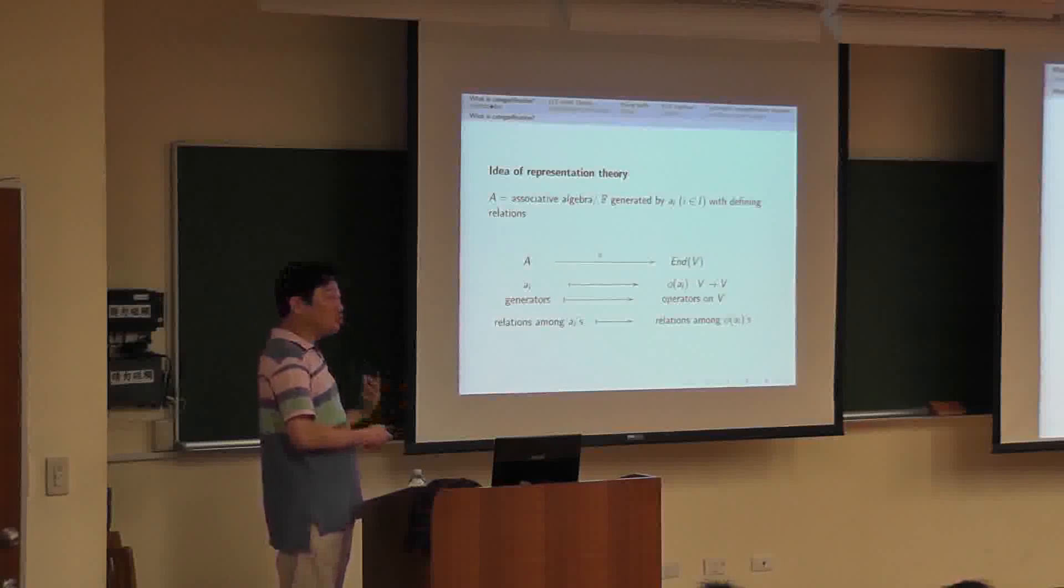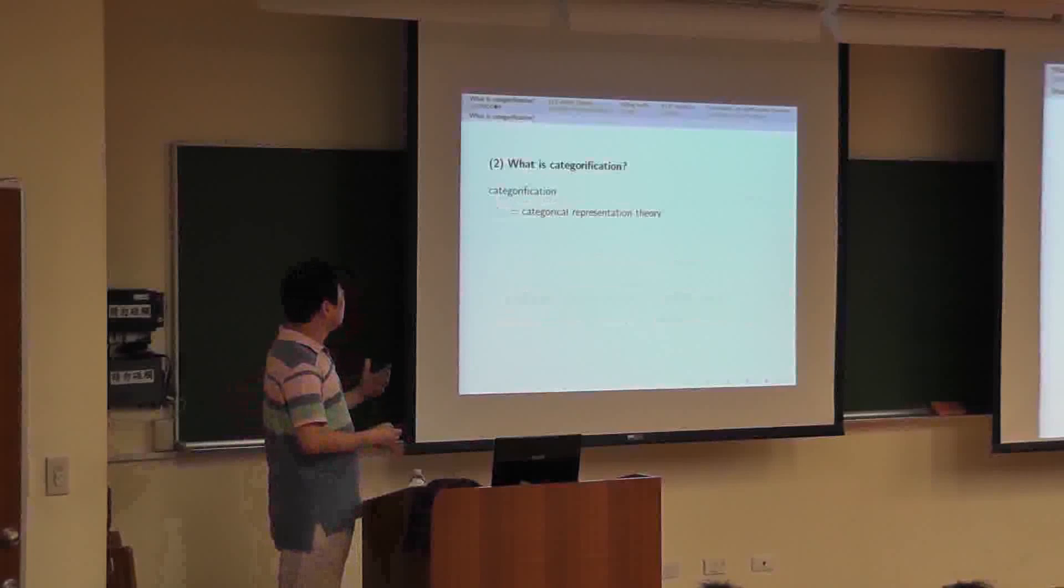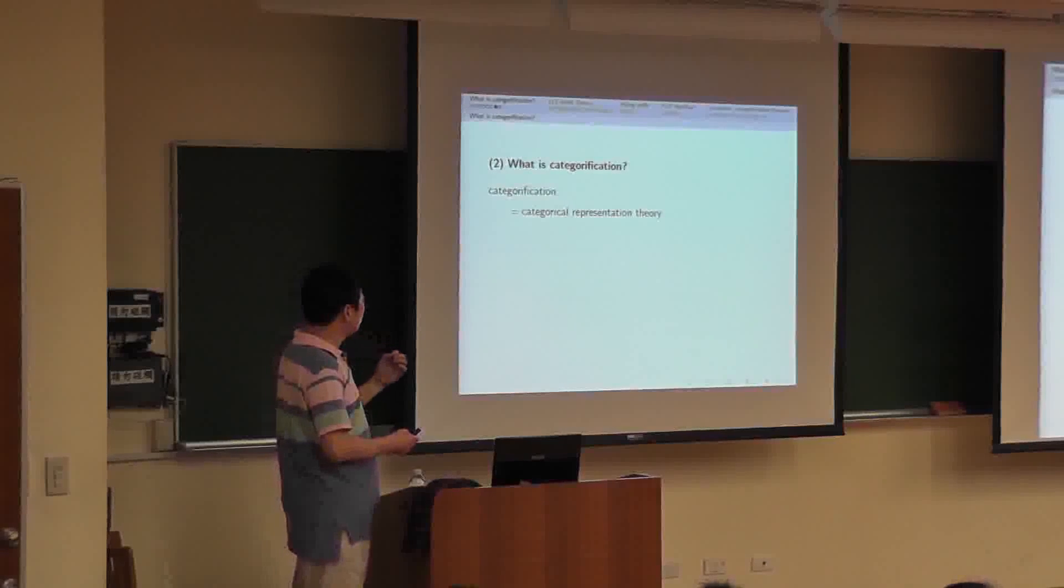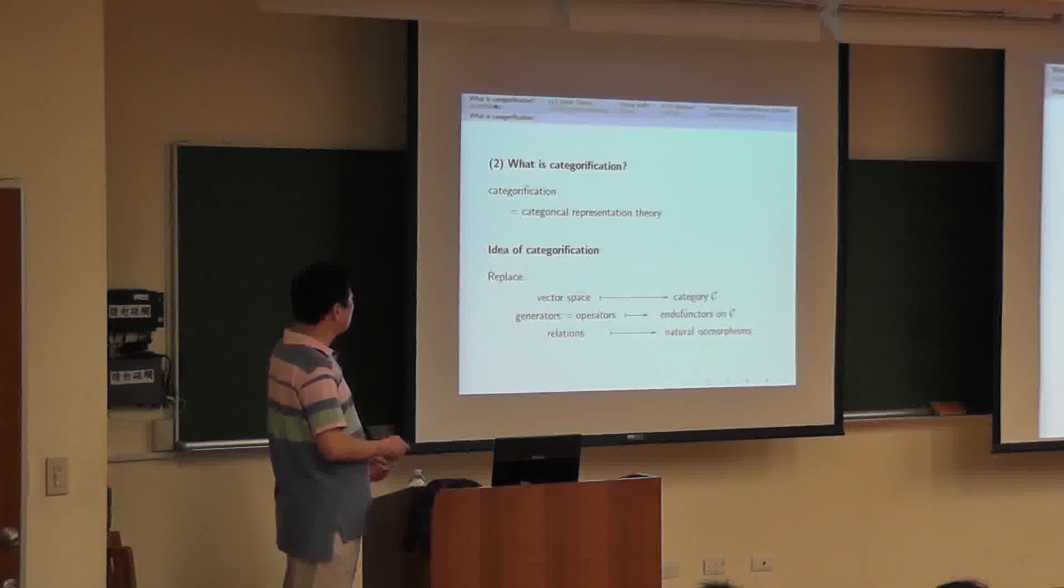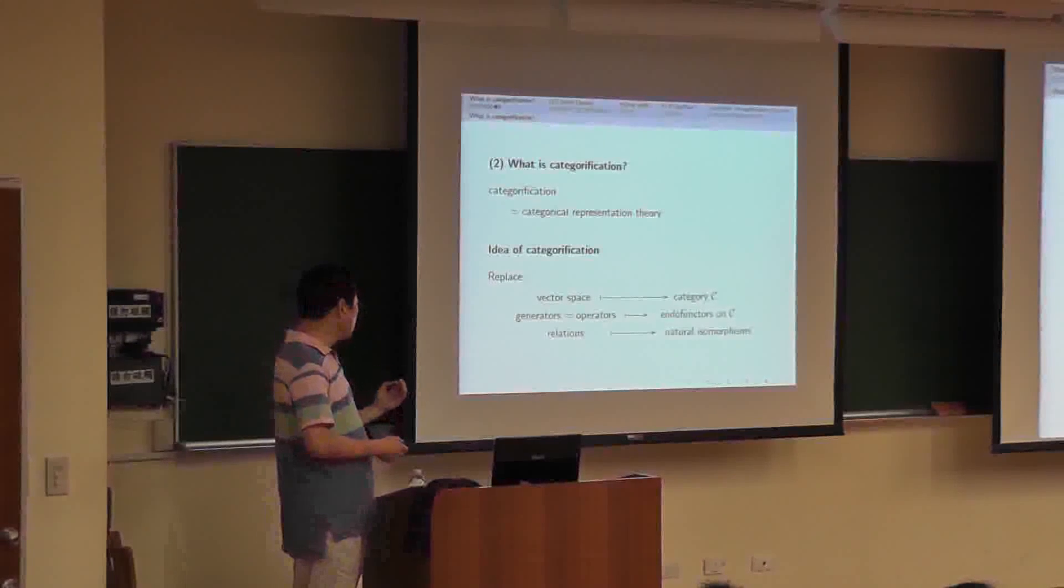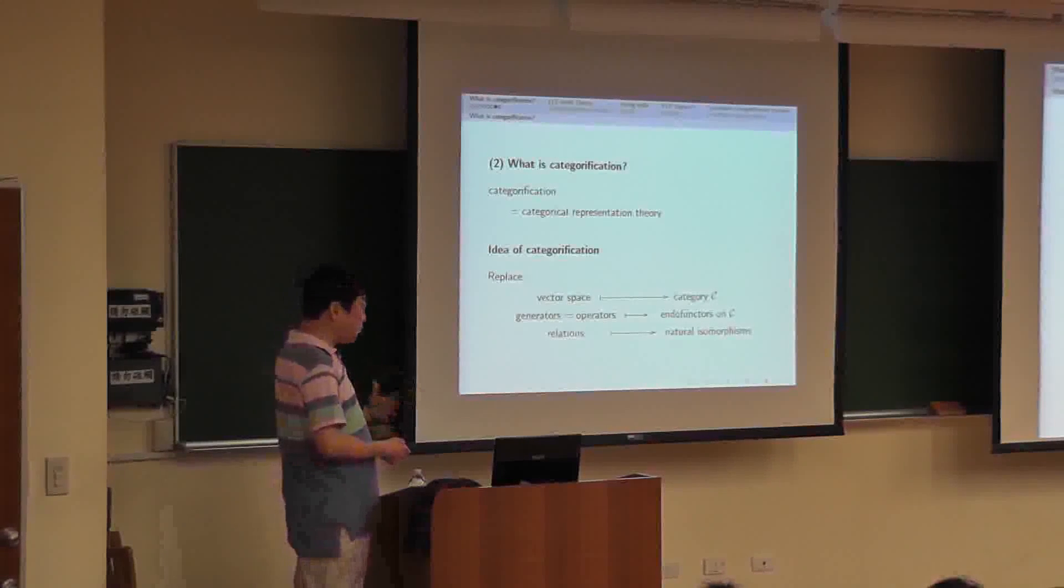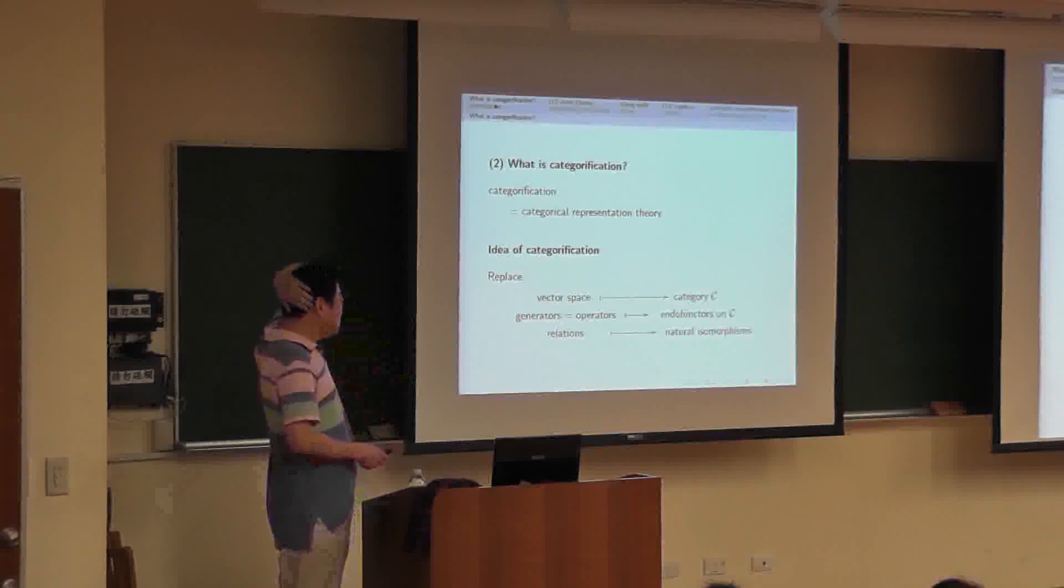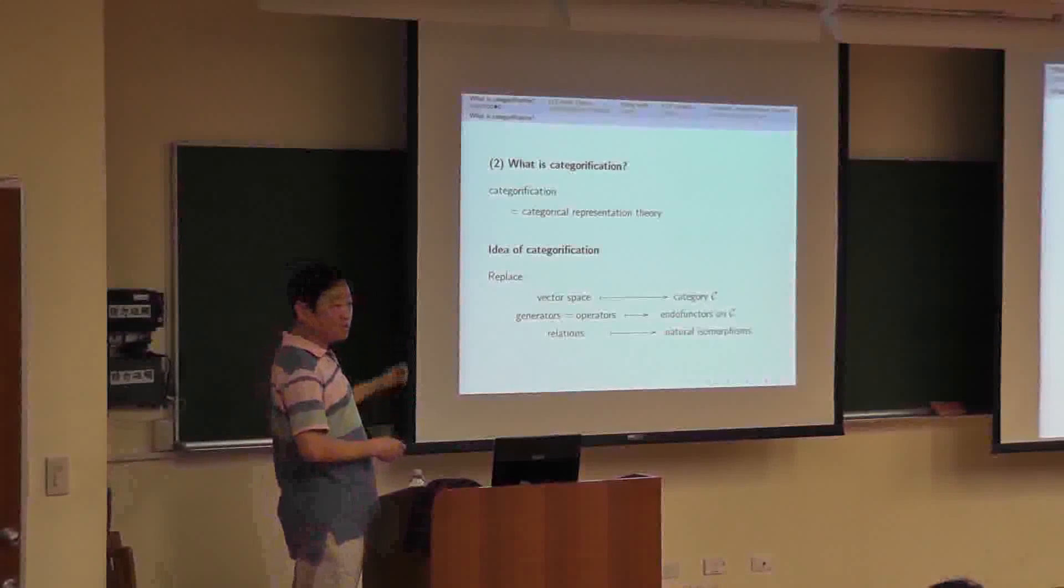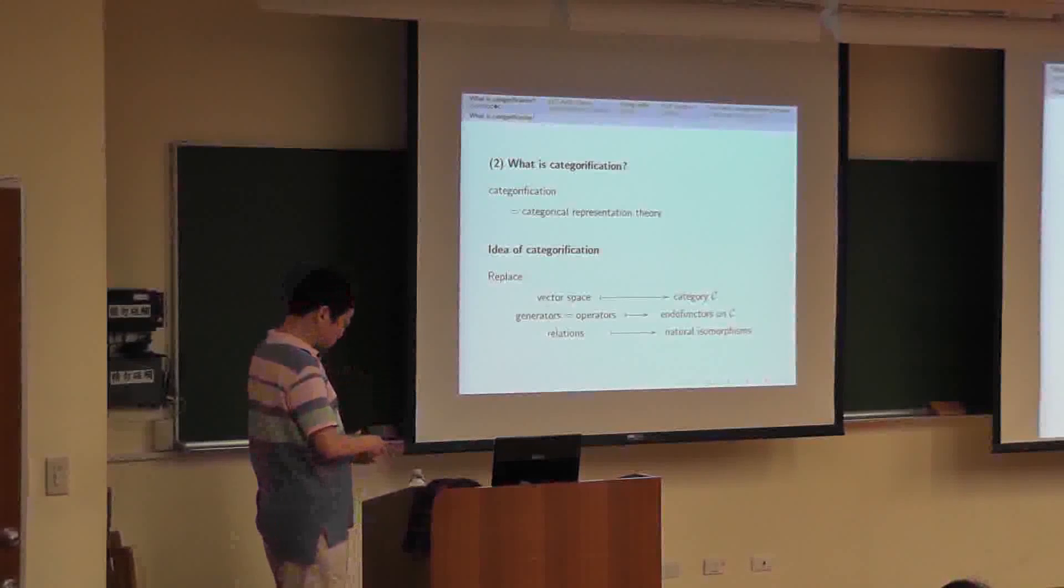Then we would like to talk about two-representation theory, which is a higher version of representation theory. The two-representation theory can be understood as categorical representation theory. So, let me talk about categorical representation theory. What is the ideal categorical representation theory? We replace vector spaces by categories, we replace generators by functors, and we replace defining relations by natural isomorphisms. Here one can see that we are considering categories, the objects are categories and morphisms, with natural isomorphisms. So actually we are dealing with two categories.